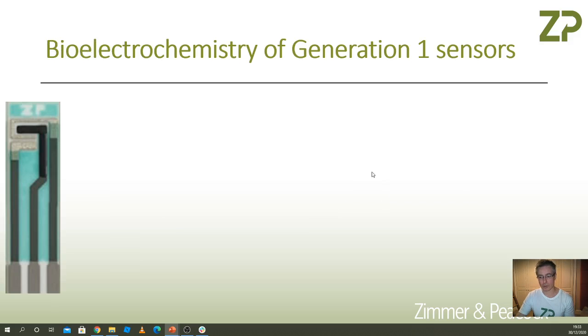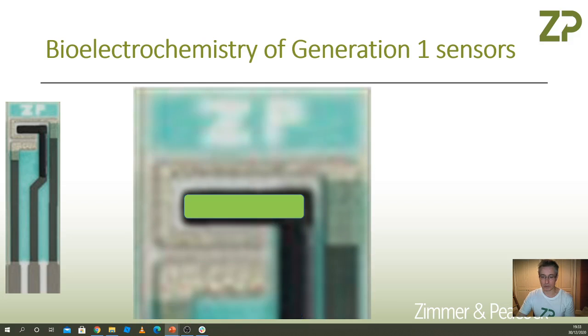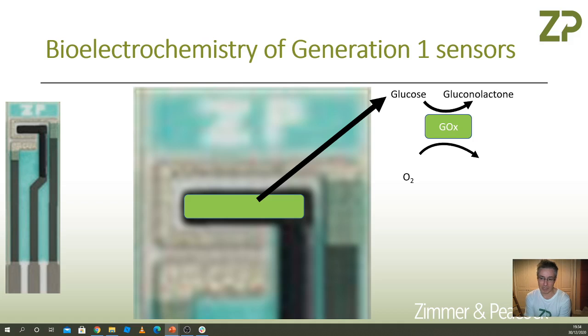Let's talk about the bioelectrochemistry of these glucose sensors. If we zoom in on one of these glucose sensors, I said there was an immobilized enzyme layer. We have glucose which in the presence of glucose oxidase and oxygen react together to give us gluconolactone. That gluconolactone immediately hydrolyzes to gluconic acid.